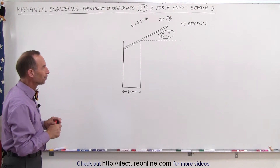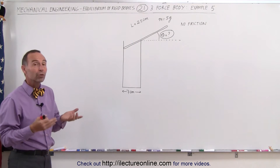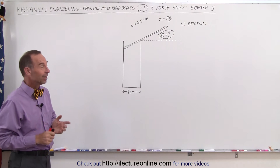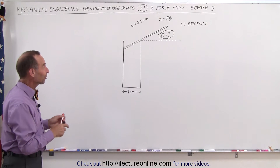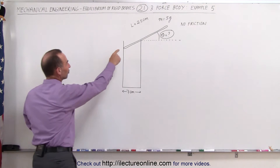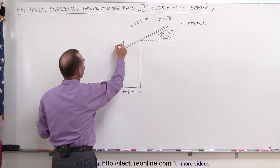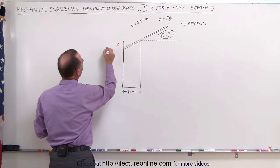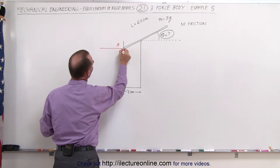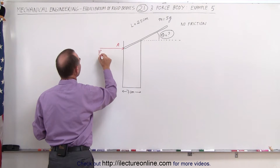Let's see if we can find the answer for that. What we need to recognize is: what are the forces acting on this? Since this is a three-force body, there probably are three forces that we need to be looking for. The first one — let's call this point A — we have a force of the edge of the glass pushing back on the rod. So this would be force at point A.